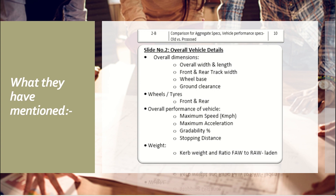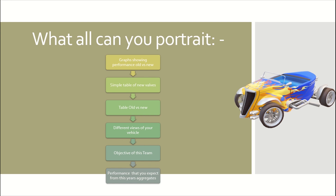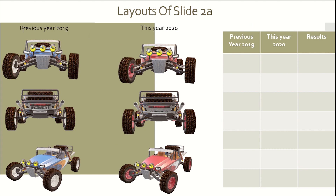Now, what all things you can show to make this slide more effective: graphs showing performance — old, BS, proposed; a simple table of new values comparing old BS and new values; different views of your vehicle performance that you expect from this year's aggregates. It is not compulsory to portray each and every point — just use a combination of a few of them. There are some layouts we would like to share with you, the layout of slide 2A and layout of slide 2B, showing the difference between this year and the previous year.